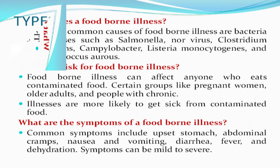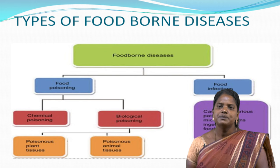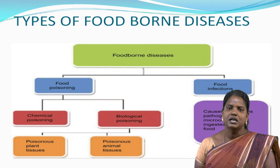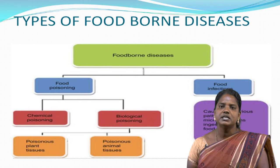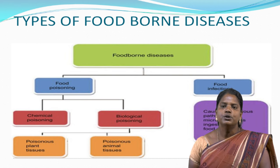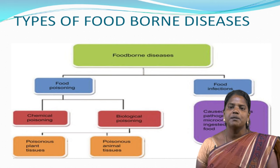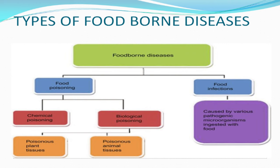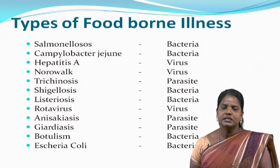The types of foodborne diseases are further divided into two main groups. First is food poisoning, which is further divided into chemical poisoning and biological poisoning. Biological poisoning is further divided into poisonous plant tissues and poisonous animal tissues. Food infections are caused by various pathogenic microorganisms ingested with food.